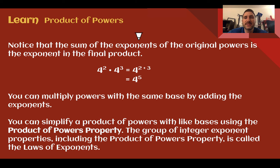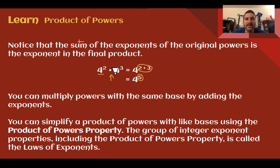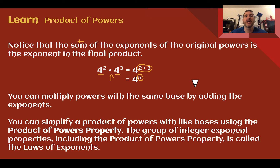Notice that the sum of the exponents of the original powers is the exponent of the final product. So 4 squared times 4 cubed equals 4 to the 2 plus 3. I added my exponents to get my final one. So if you are multiplying with the same base, you can just add the exponents. This is called the product of powers property, which along with some other properties in this lesson and future lessons, together make up the laws of exponents — the rules we follow to simplify expressions involving exponents.